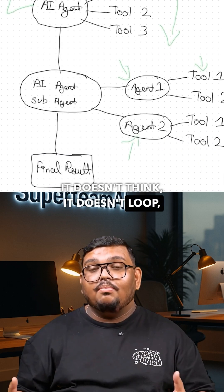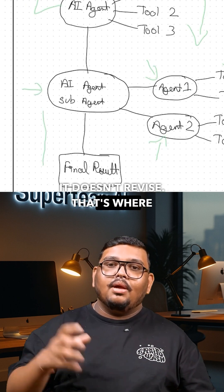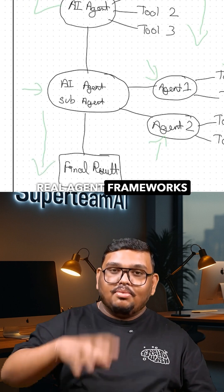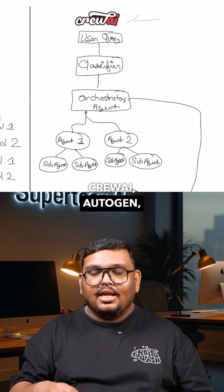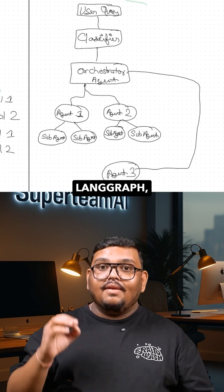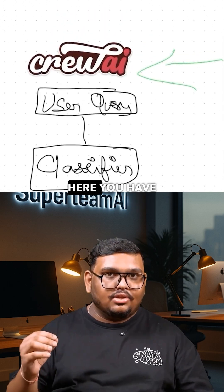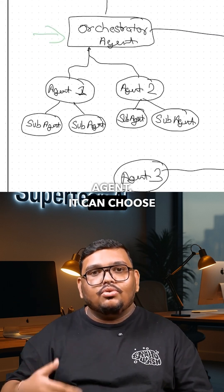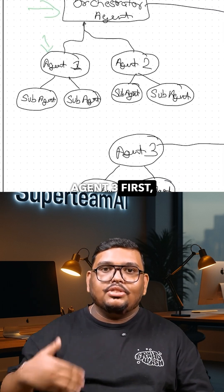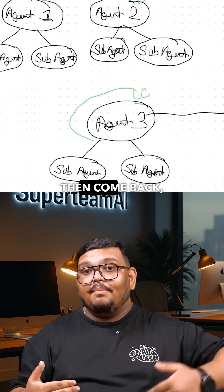It doesn't think, it doesn't loop, it doesn't revise. That's where real agent frameworks come in: CrewAI, AutoGen, LangGraph, Google ADK. Here you have an orchestrator agent — it can choose agent three first, skip one and two, then come back.